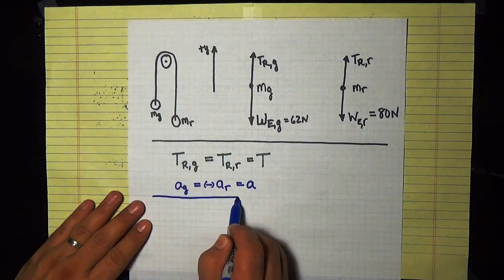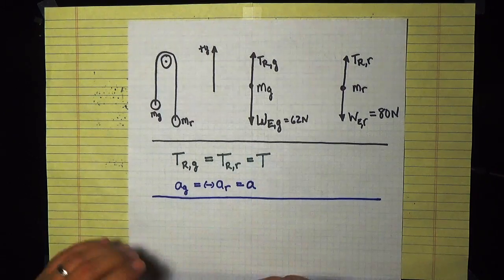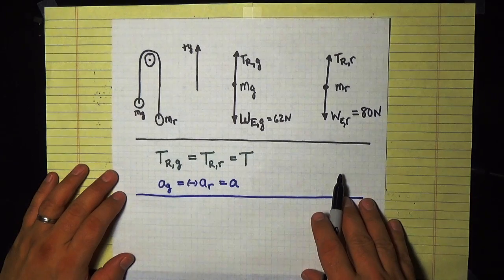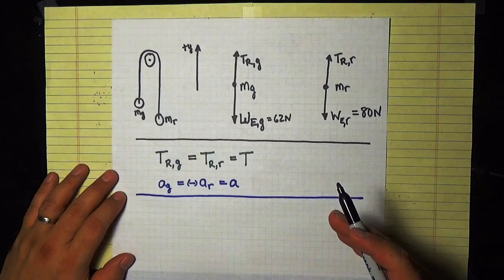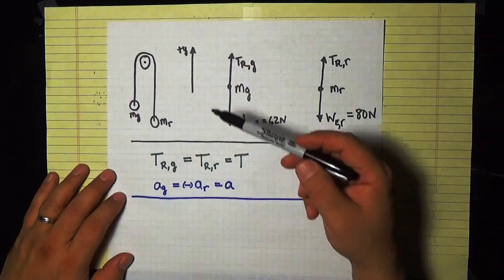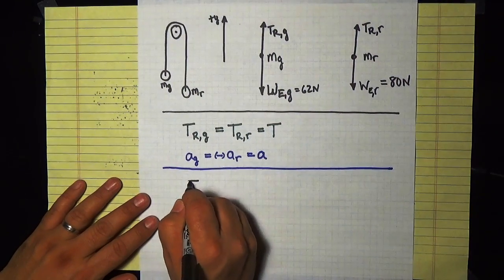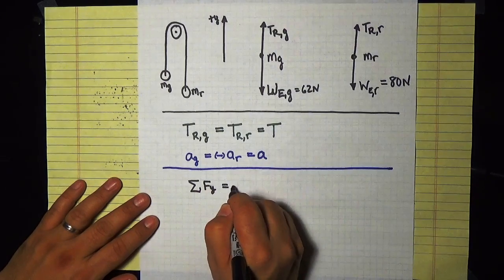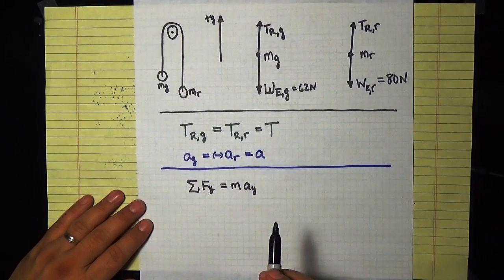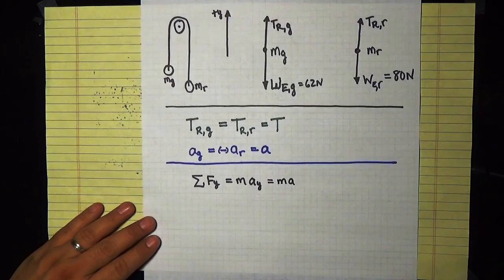Newton's second law states that the net force on any object equals mass times acceleration. Written as a vector equation, it holds for each component. Since this is a one-dimensional problem, we only care about the y-components: the sum of forces in y equals mass times acceleration in y. Both objects share the same magnitude of acceleration A, so we write this as mass times A for each object.